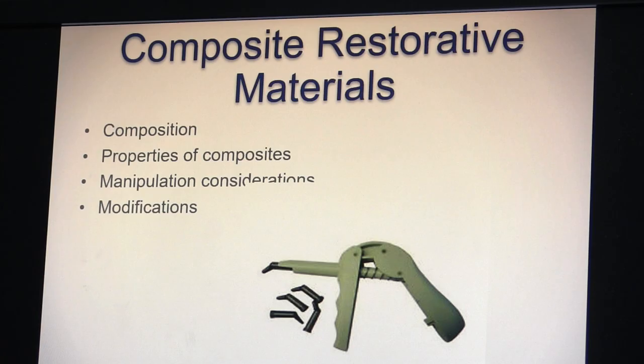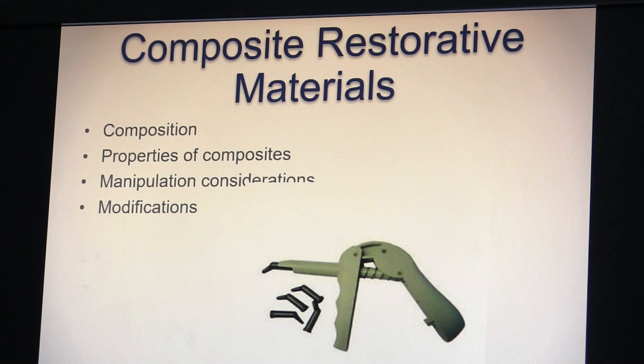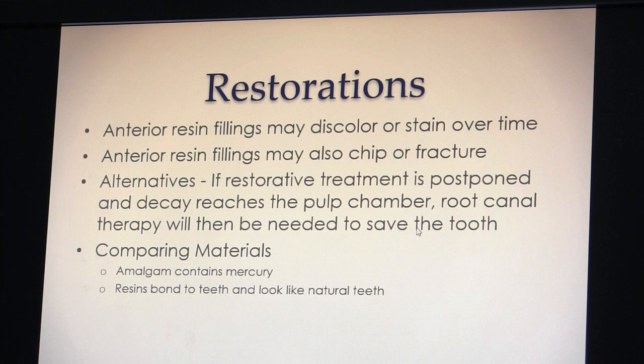Composite comes in different shades using a composite gun with carpules. There are bleach-shade materials and standard shades such as A1, A2, and darker options. For a patient with very white teeth we wouldn't use a dark shade for front teeth — it must be aesthetic. Anterior resin fillings can discolor and stain over time; sometimes the doctor can polish the stain off with a handpiece and bur, other times the restoration must be replaced. Composites can also chip and fracture.